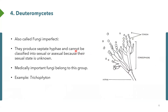Finally, we have the deuteromycetes, also called fungi imperfecti. The only reason is we cannot really tell which kind of sexual state they are normally in. They produce septate hyphae but cannot be classified based on sexual or asexual reproduction because their sexual state is unknown. All the other fungi are named based on the kind of spores produced during their sexual state. Most medically important fungi are actually in this class. A classical example is Trichophyton.